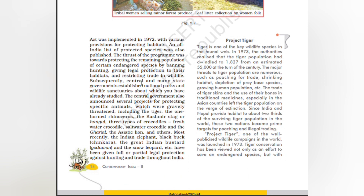Subsequently, central and many state governments established national parks and wildlife sanctuaries. The central government also announced several projects for protecting specific animals which were gravely threatened, including the tiger, the one-horned rhinoceros, the Kashmir stag or hangul, three types of crocodiles — the freshwater crocodile, saltwater crocodile, and the gharial — the Asiatic lion, and others. Most recently, the Indian elephant, blackbuck, chinkara, the Indian great bustard (godavan) and the snow leopard have been given full or partial legal protection against hunting and trade throughout India.